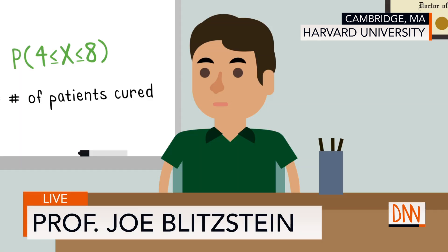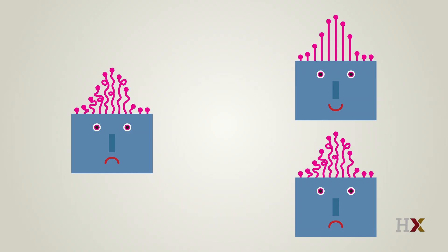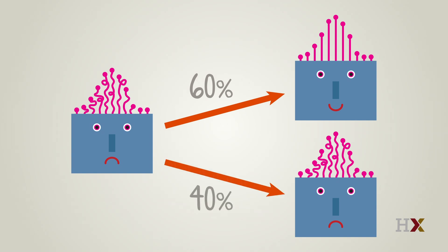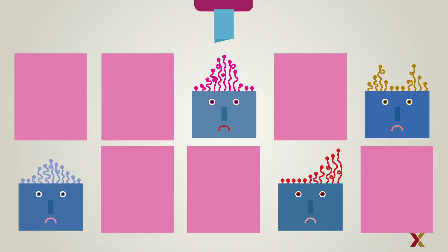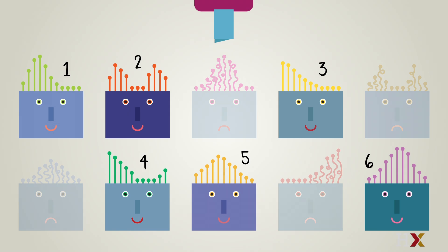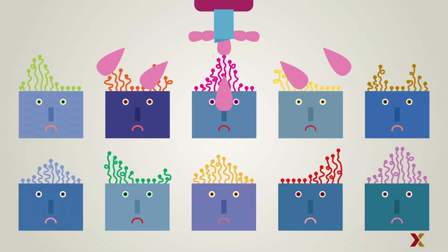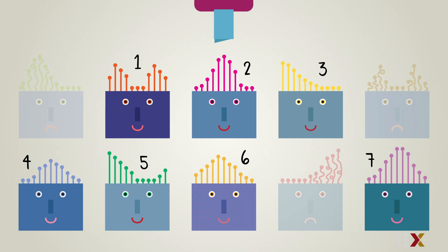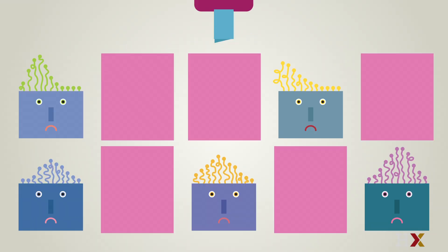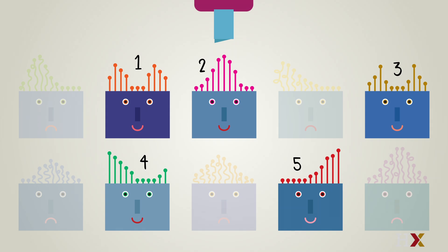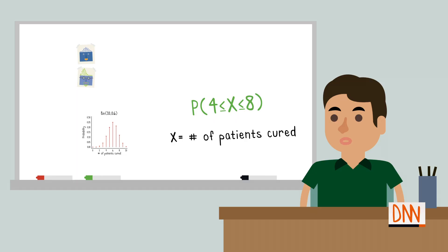Based on the limited data we have so far, we estimate that the treatment has a 60% chance of success and a 40% chance of failure. Let me get this straight — so each day, you expect that 6 out of the 10 treated patients will be cured? On average, 6 out of the 10 will be cured. But there could easily be more than 6, or fewer than 6 on a particular day. We have to consider the whole distribution.